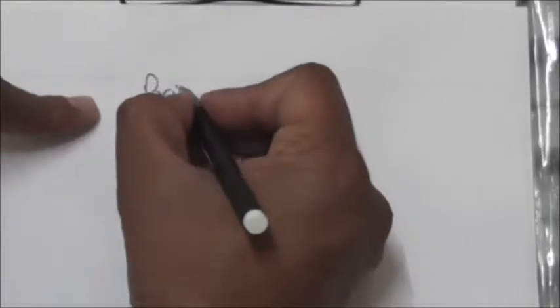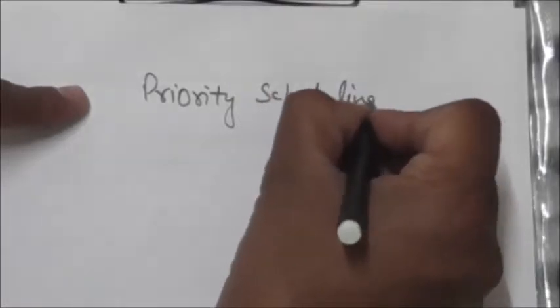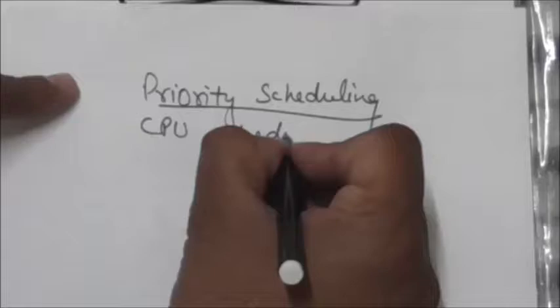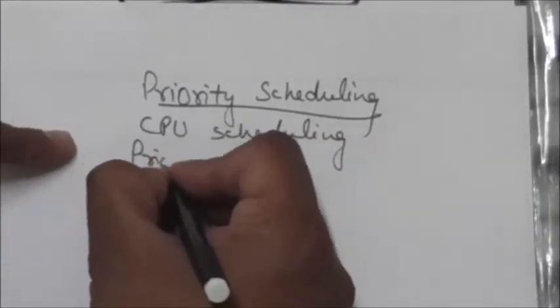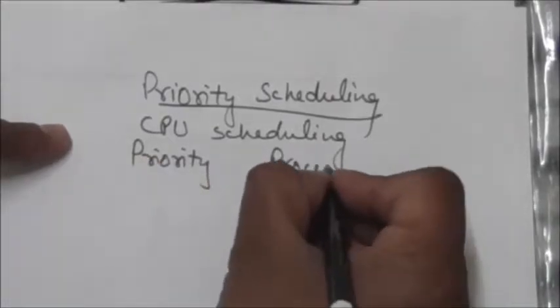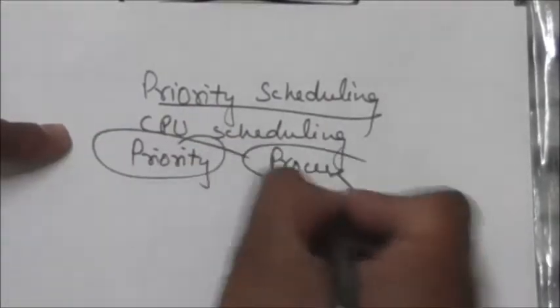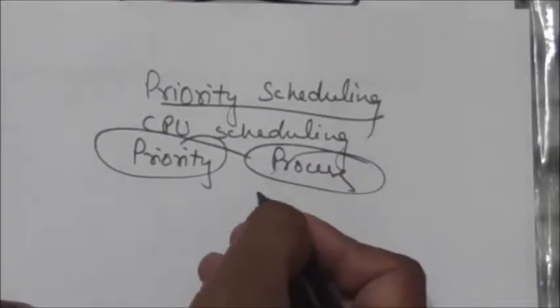Hello friends, welcome back. In this tutorial we will study about priority scheduling. Priority scheduling is a CPU scheduling algorithm where a priority is associated with each process, and the CPU will be allocated to the process which has the highest priority.